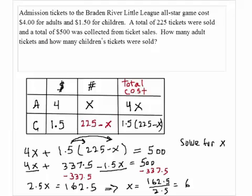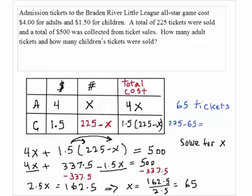That gives us X equals 65 — that's the number of tickets sold for adults, so 65 adult tickets were sold. The number of children's tickets sold would be 225 minus 65, which gives 160 tickets.